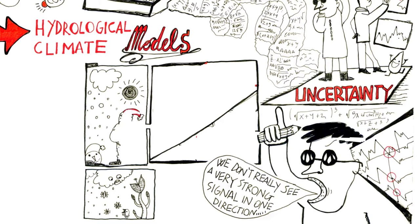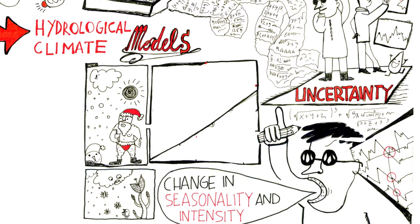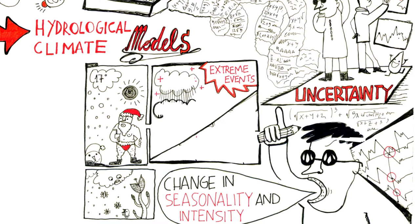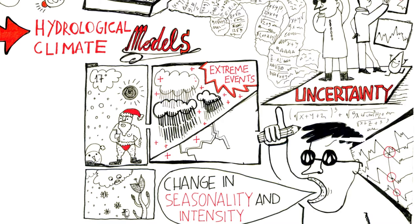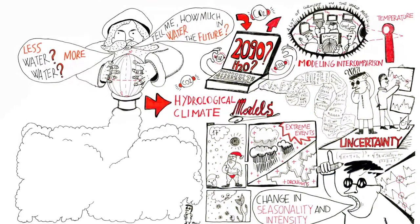What we do see is a change in seasonality and a change in intensity. There's a trend towards more extreme precipitation events where a lot of precipitation falls in a shorter amount of time, and also, on the other hand, a trend towards increasing periods of dryness with less rain — and that is at the global level.